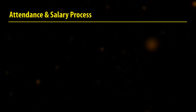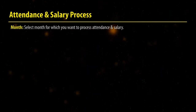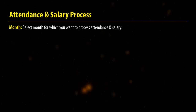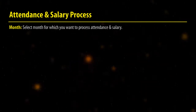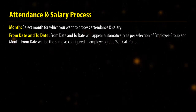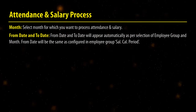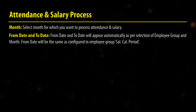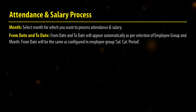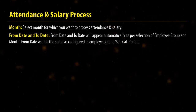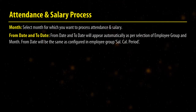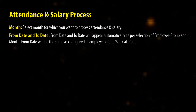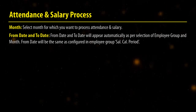Attendance and salary process. Select the month for which you want to process attendance and salary. The from date and to date will appear automatically as per the selection of the employee group and month. The from date will be the same as configured in the employee group salary calculation period.